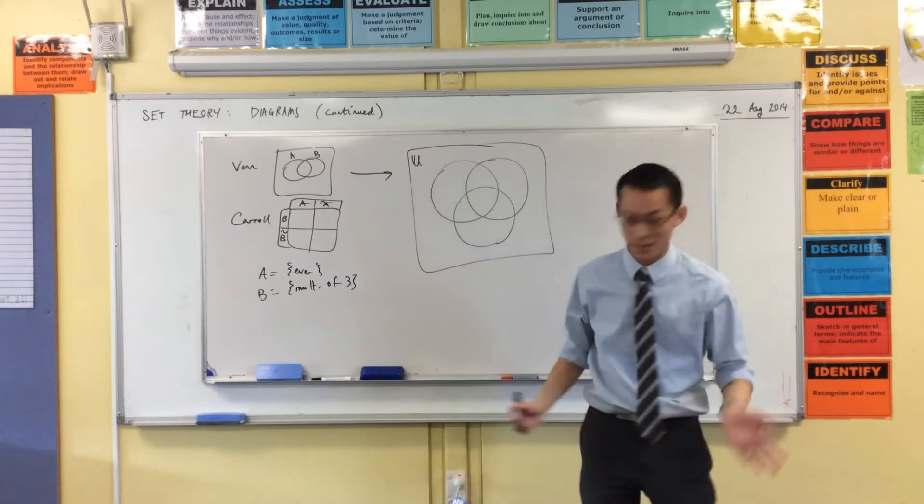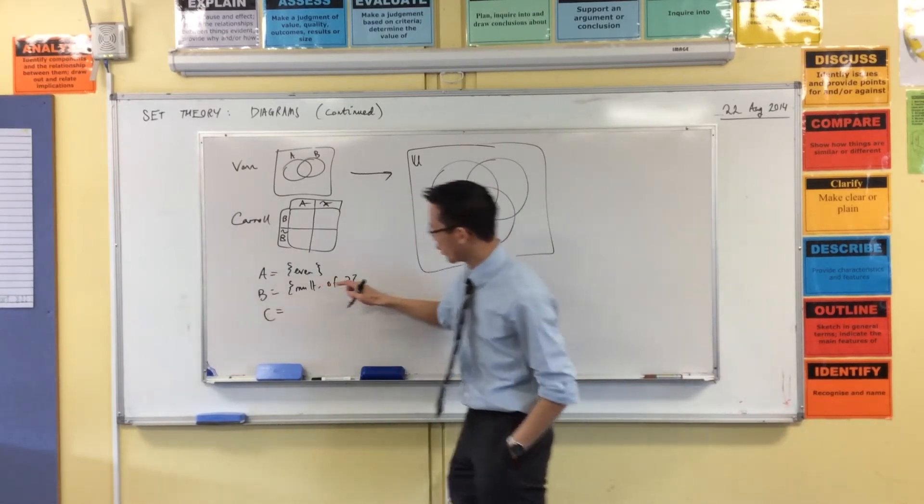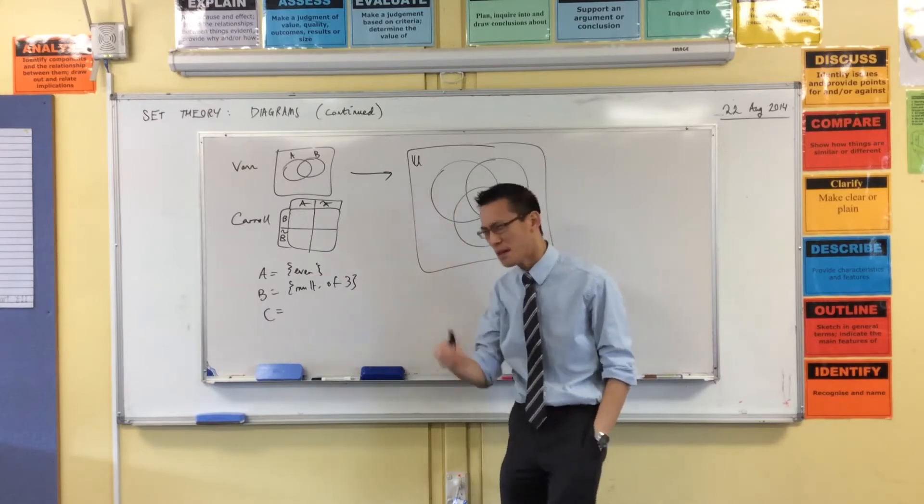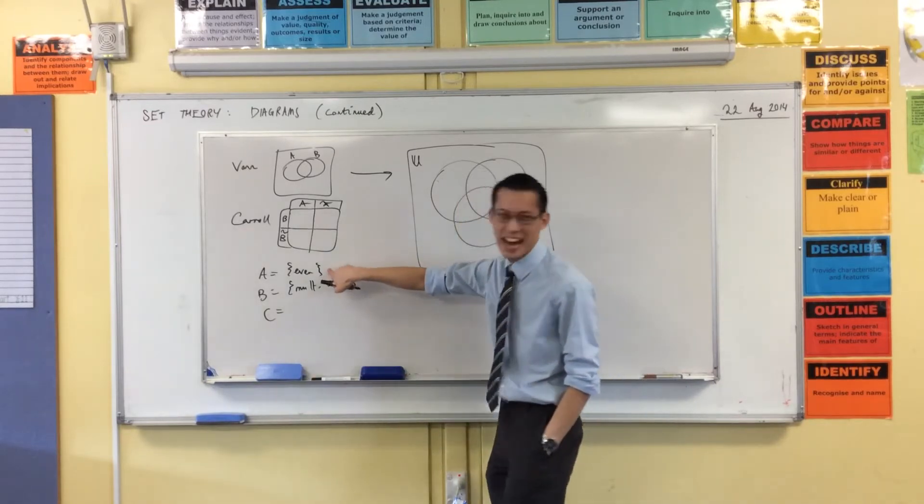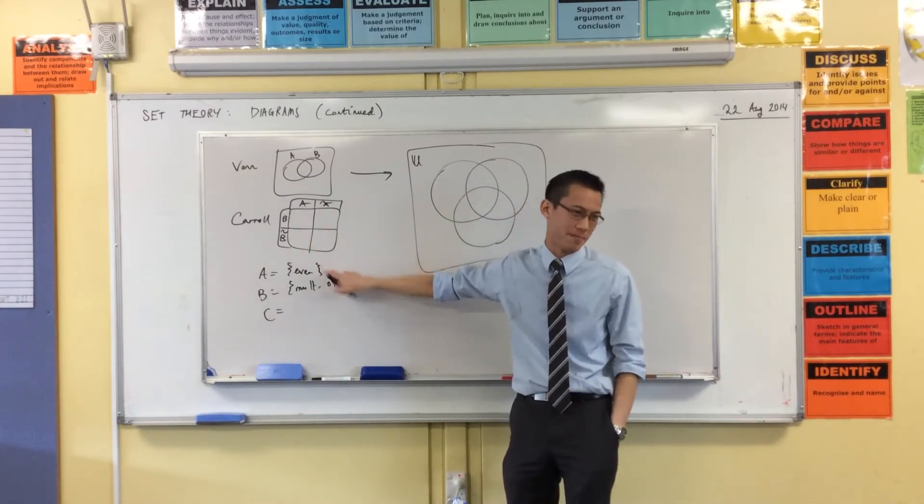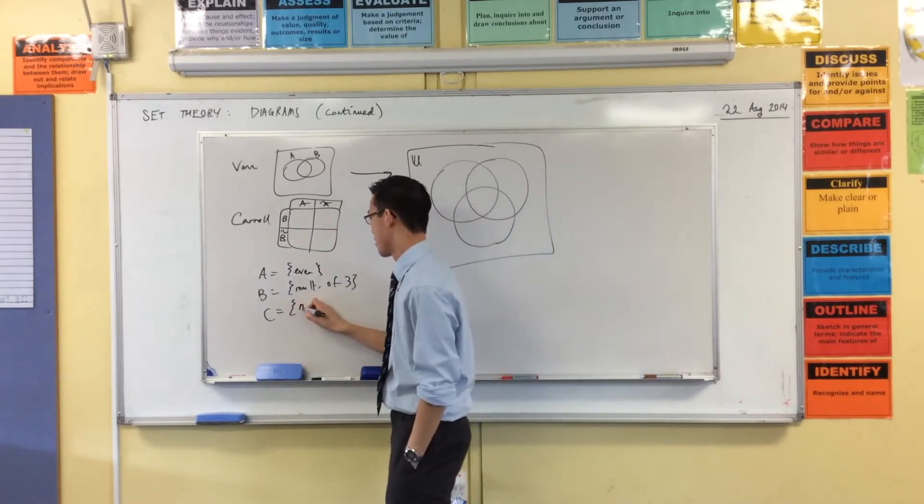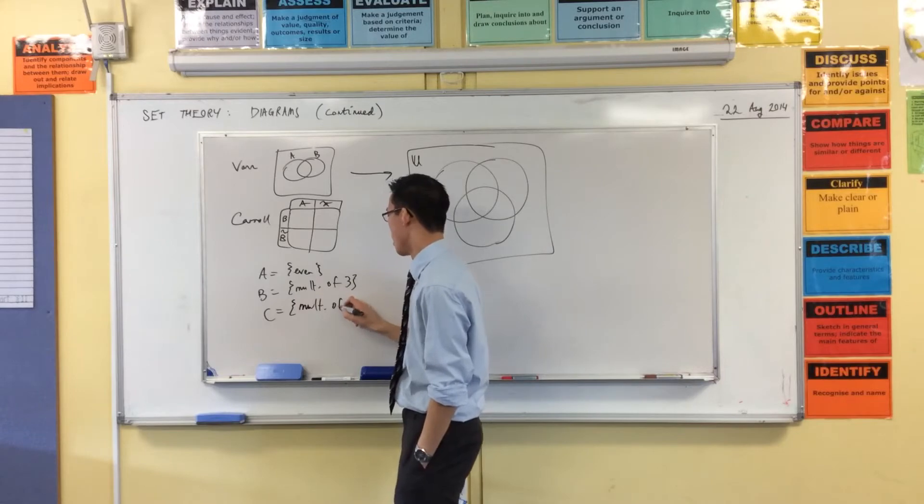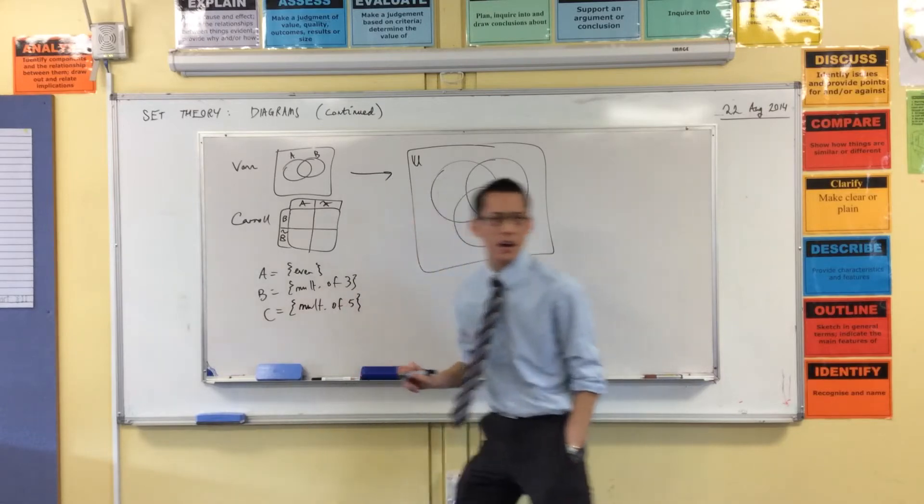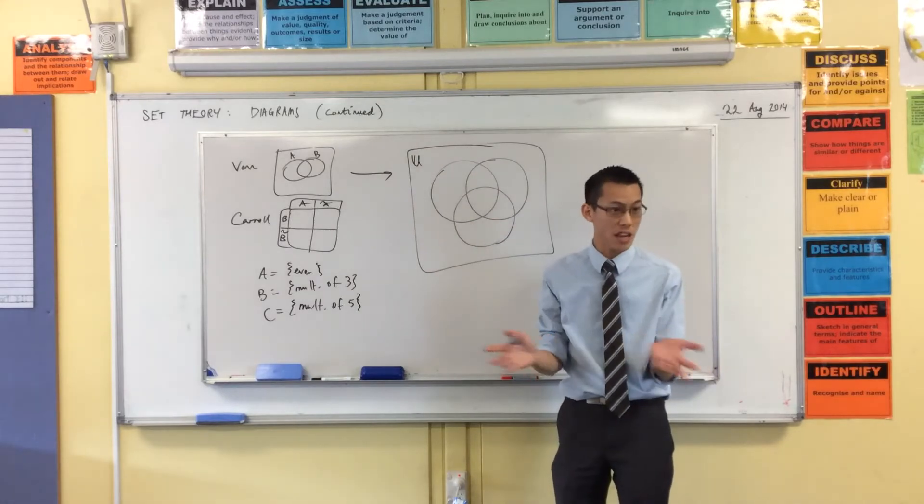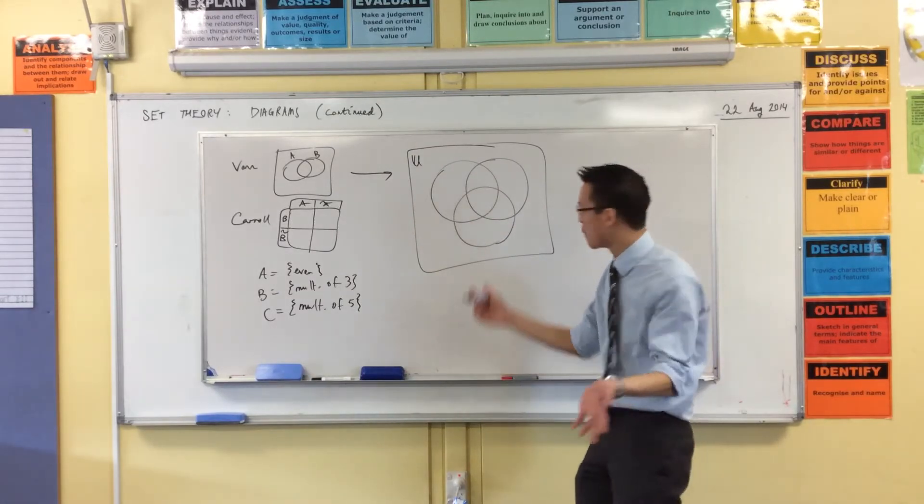Now, what shall we pick as our third set? C. I suppose you could go multiples of two, three, four, but four's a bit boring. Four's a bit boring because it's kind of so overlapping with this one. I'm just going to ditch it. Let's go up to five. Multiples of five. Now, I think we went and defined the universal set as numbers under 30. Is that right? I think that's enough numbers for this.